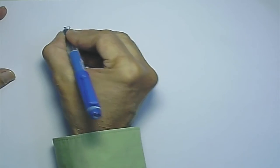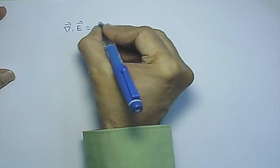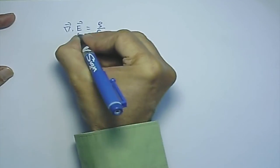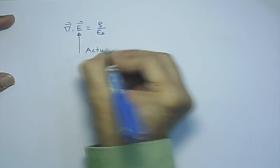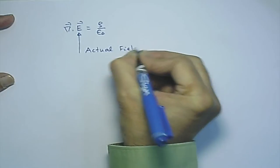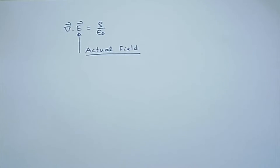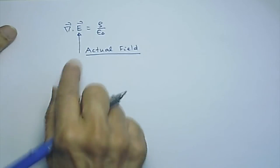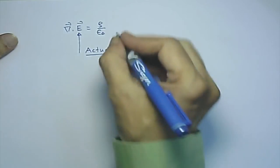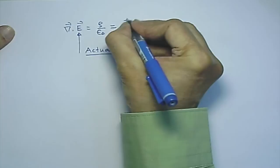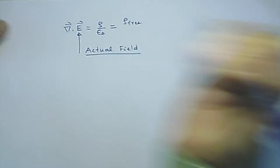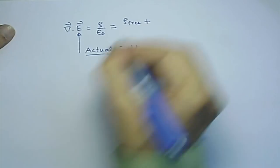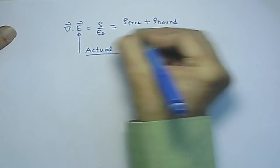Remember that del·E was shown to equal rho over epsilon_0. This electric field is the actual field — the field such that if you put a charge q there, the charge q will experience a force given by q times E. That is the field you always determine experimentally. So del·E = rho/epsilon_0.